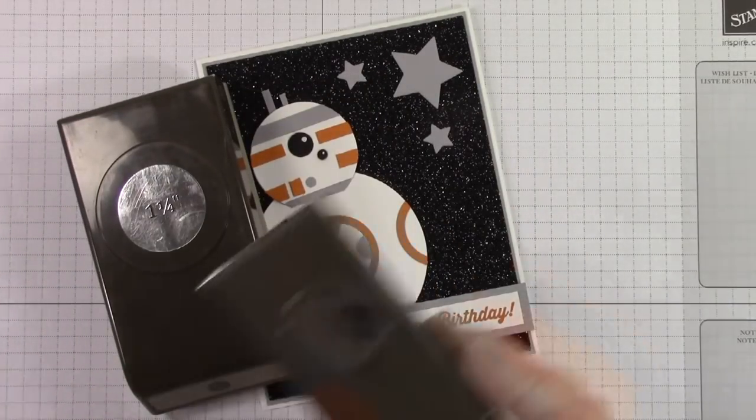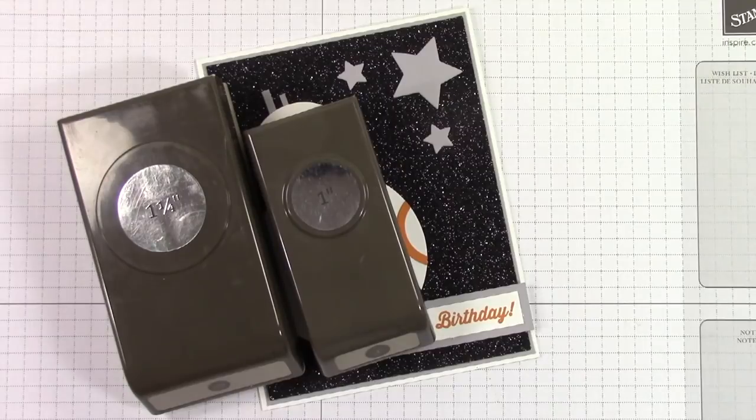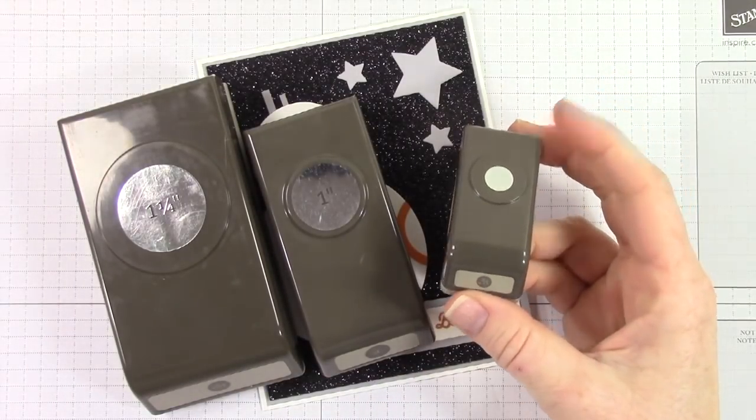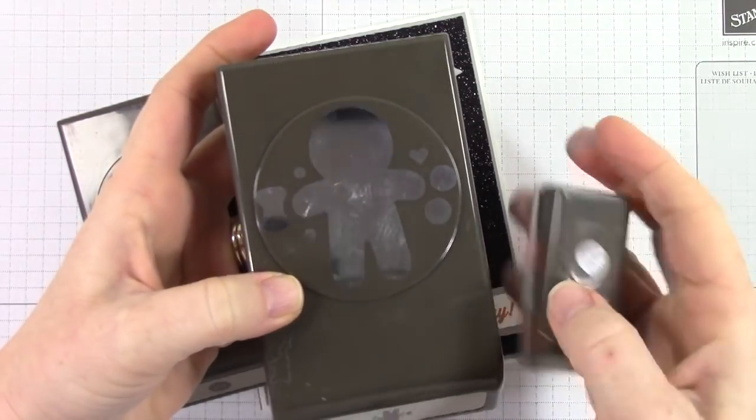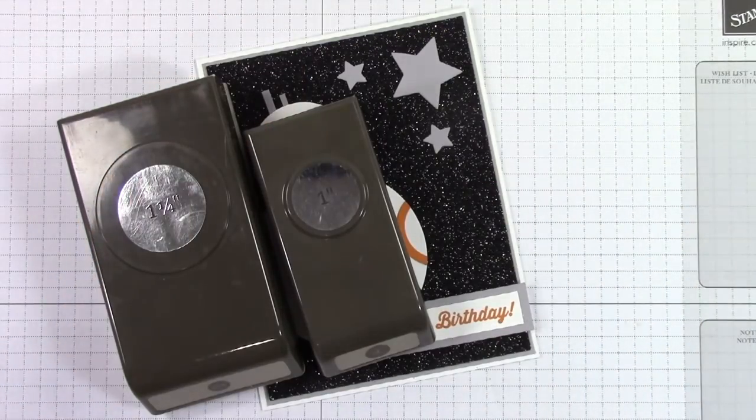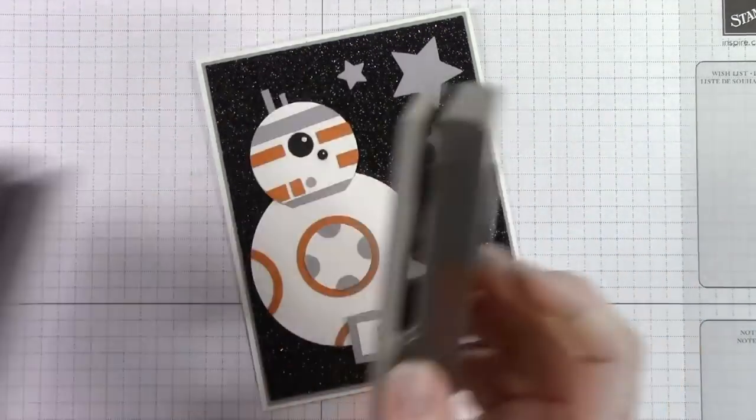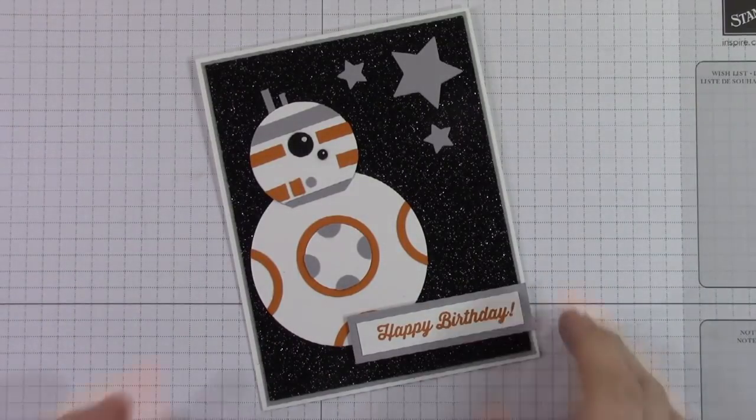I'm using a one and a quarter inch circle punch, a one inch circle punch. This punch is retired. However, you can get the same size almost from the cookie cutter punch and then I'm using the little bitty dots also that are meant to be the eyeballs from the cookie cutter punch.